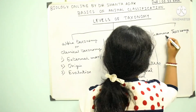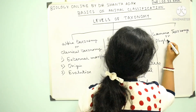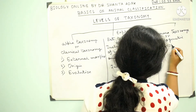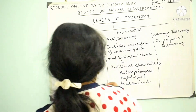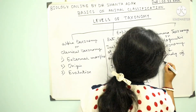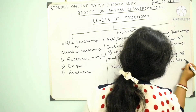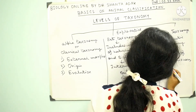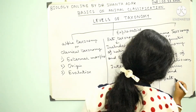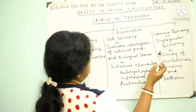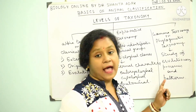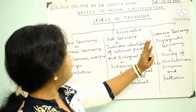The third level is gamma taxonomy, also called phylogenetic taxonomy. This includes the study of evolutionary processes and patterns. These are the three levels of taxonomy.